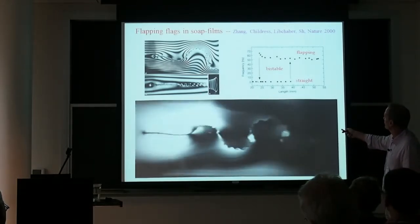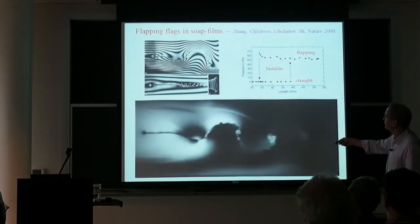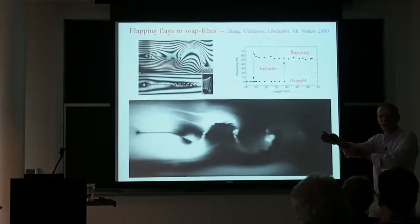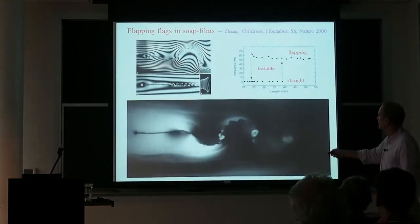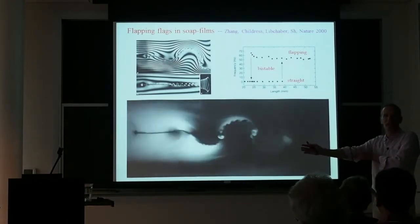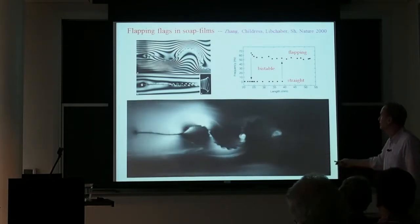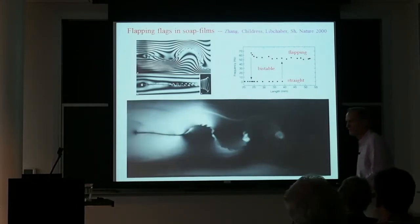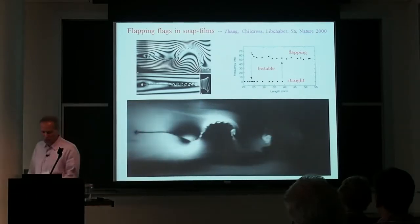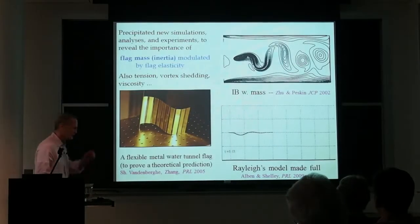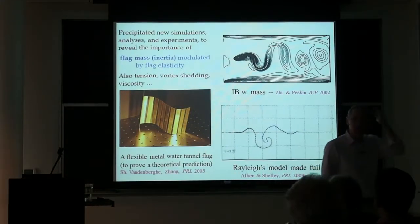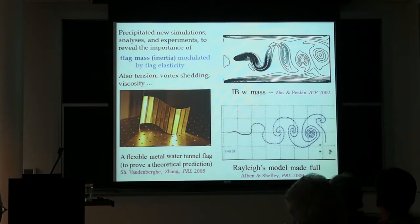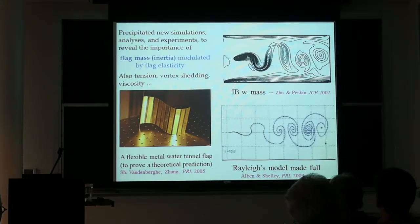One learned many interesting, nonlinear things from this experiment. For example, with a very small flag length, it stays straight — dominated by tensile elastic forces. Once long enough, presenting sufficient mass to the surrounding fluid, it would jump into an unstable flapping mode. This was hysteretic, producing a region of bistability. This experiment started something of an industry, both at Courant and in many other places, revisiting this classical but complicated fluid-structure interaction problem.